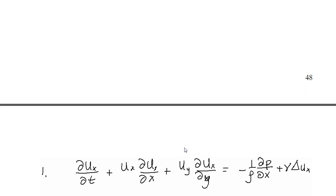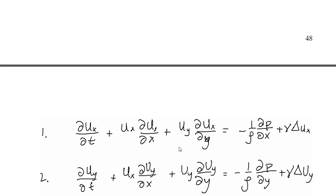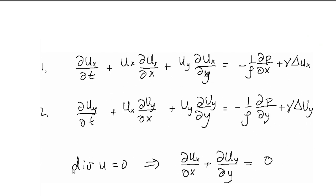If we write this vector equation component-wise, we obtain these two equations. Here rho is the density of the fluid, and this factor is the viscosity of the fluid. And as mentioned earlier, the fact that the divergence of the vector is zero can be written in the following way.